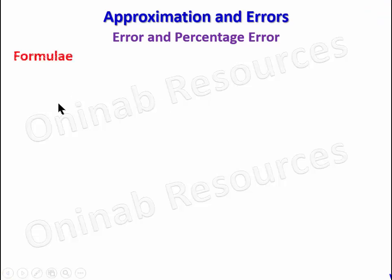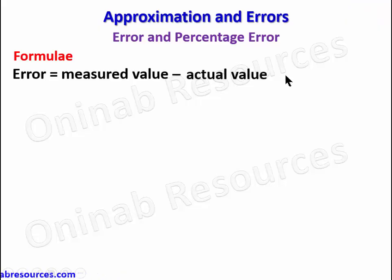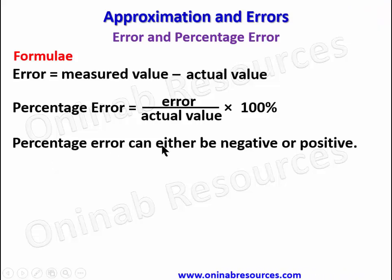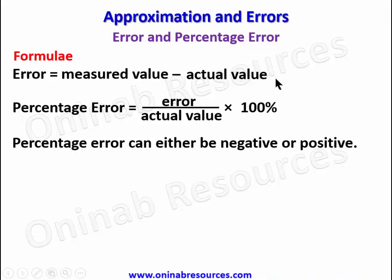Now we look at the formulae we are going to be using for error and percentage error. The first one: error is measured value minus the actual value. The percentage error is error over the actual value times 100 percent. The percentage error can either be negative or positive, and this comes from the error. If the measured value is greater than the actual value, the error is positive; if the measured value is less than the actual value, the error is negative.